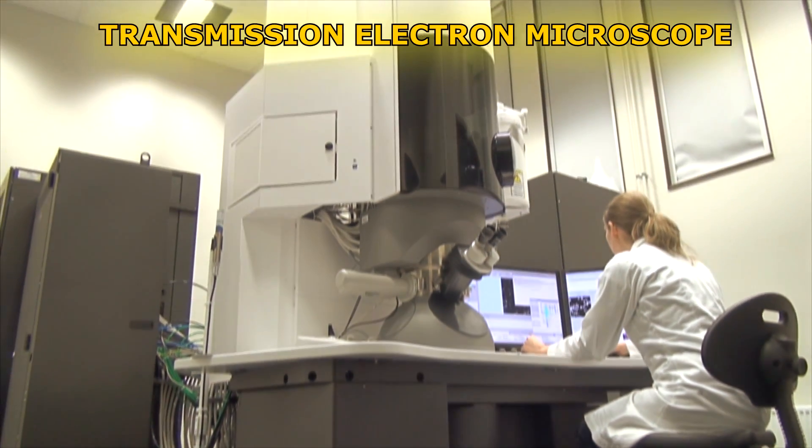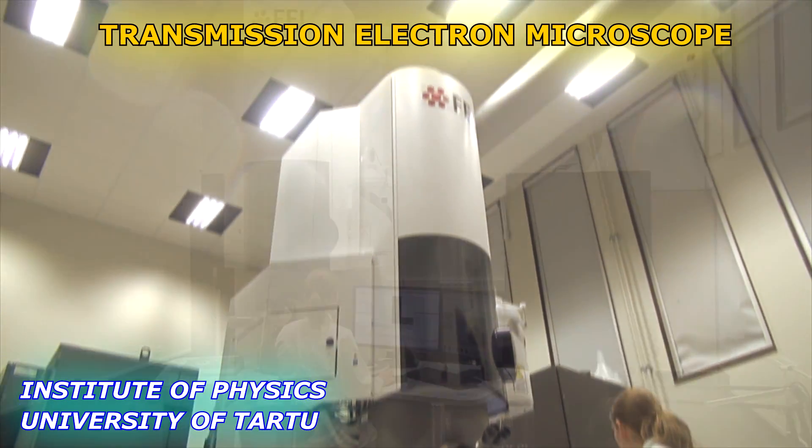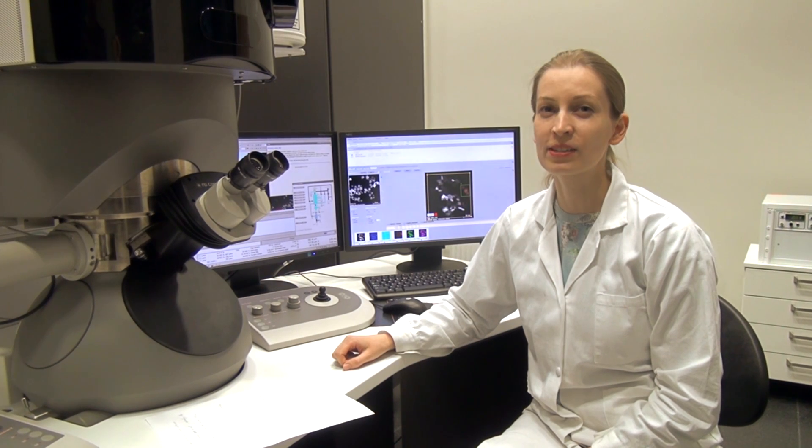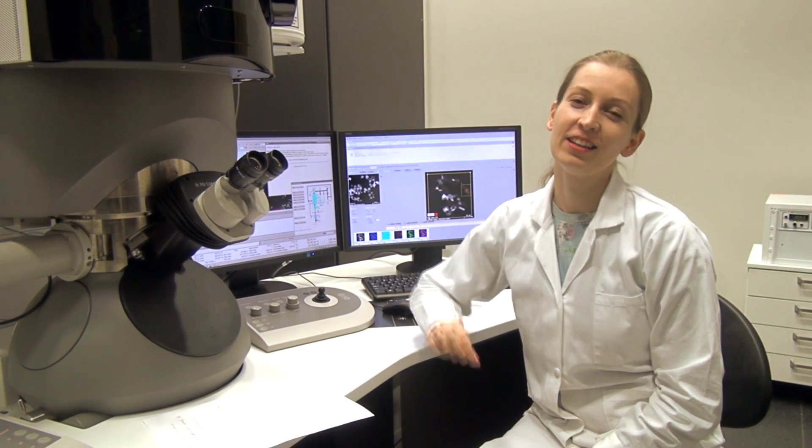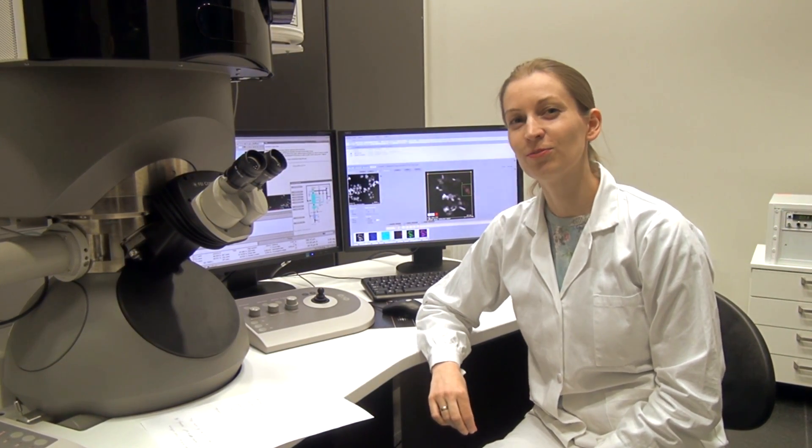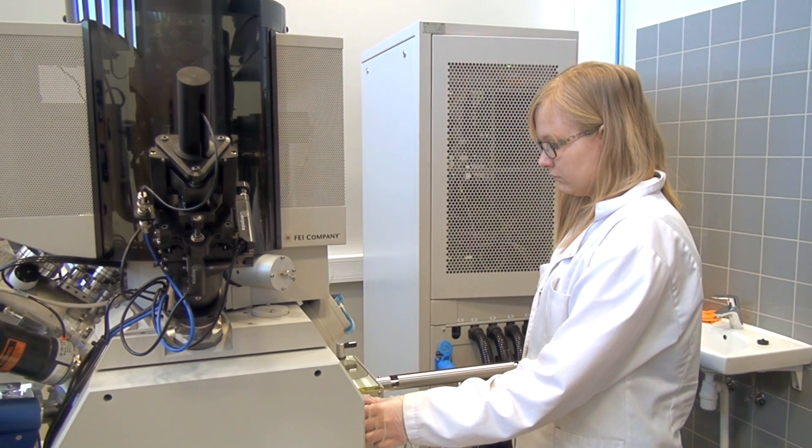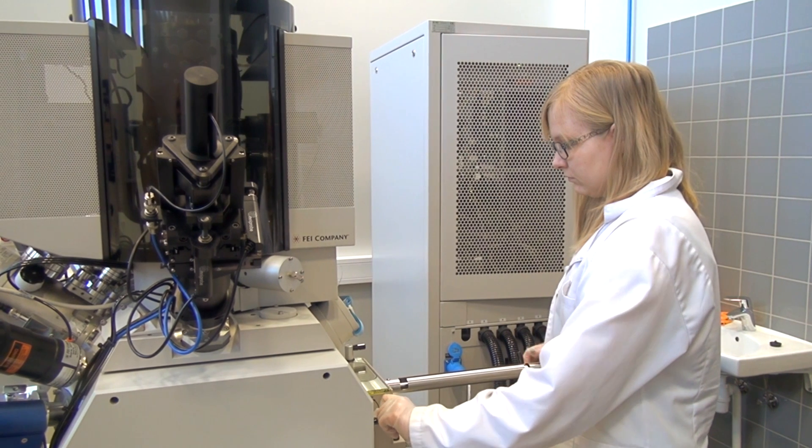Over here we have a modern transmission electron microscope, which is one of the most powerful tools a material scientist can use. This microscope can achieve even atomic resolution, but it comes with a price. The samples need to be very thin, 10 nanometers or so. Making a material so thin, however, is no simple task. But it can be done with the focused ion beam under a scanning electron microscope.